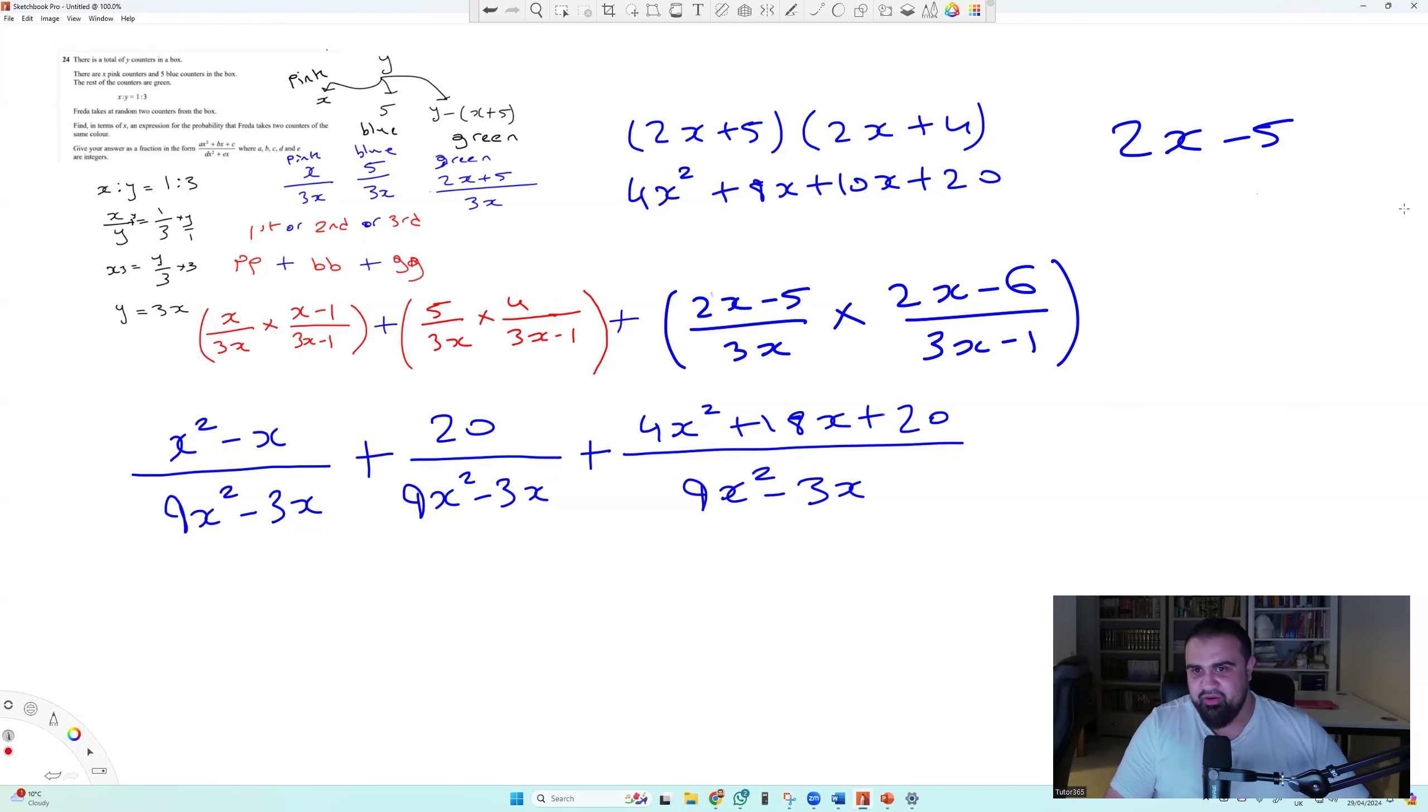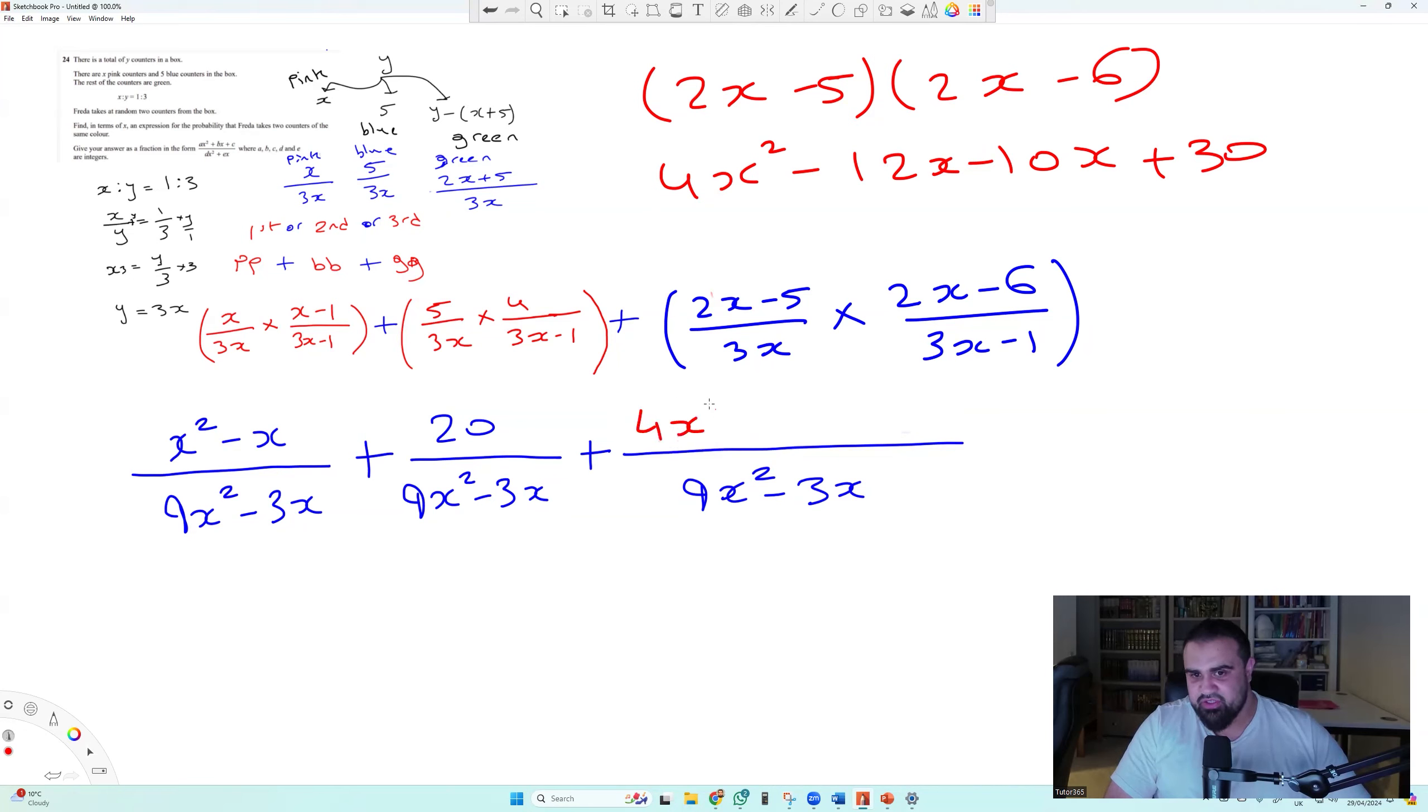So now, if we multiply that out, 2x minus 5 and then 2x minus 6. So 2x times 2x is 4x squared, minus 12x, minus 10x, plus 30. Yeah, now we get it. So the top numerator here is actually 4x squared minus 12x minus 10x, which gives you minus 22x plus 30.